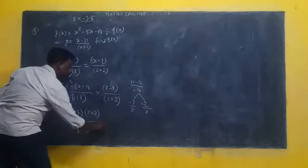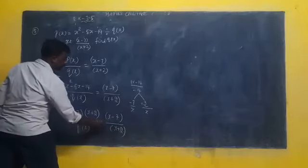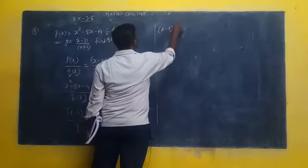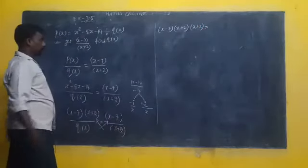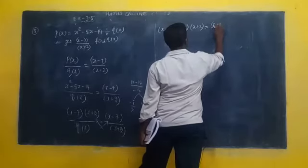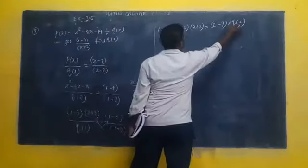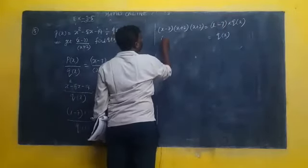Divided cube of X. Divided X minus 7. Divided X plus 2. X plus multiple. X minus 7. X plus 2. Q of X plus multiple. X plus 1. X minus 7. X plus 2. X minus 7. X plus X plus X. X plus 2.